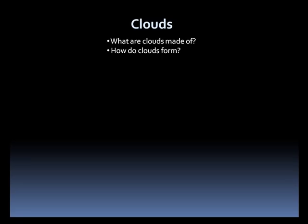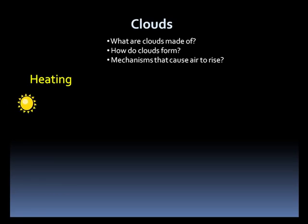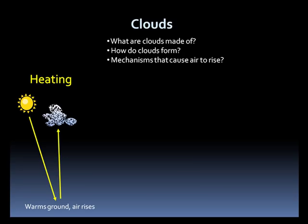Basically, there are three ways. One is by heating. The sun causes the ground to warm. The warm air rises, cooling as it does, forming clouds.